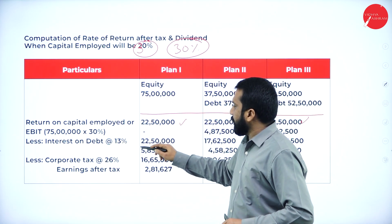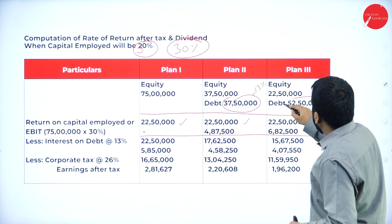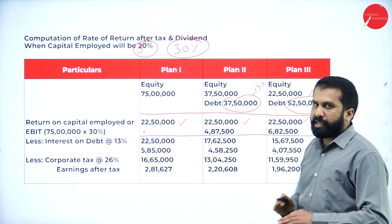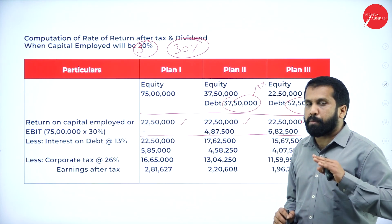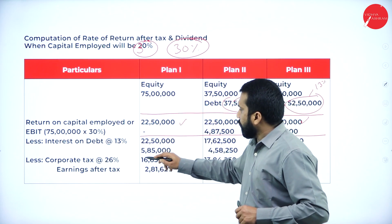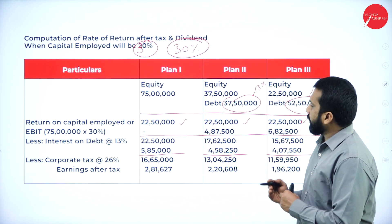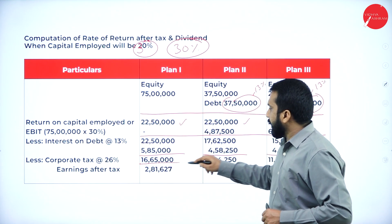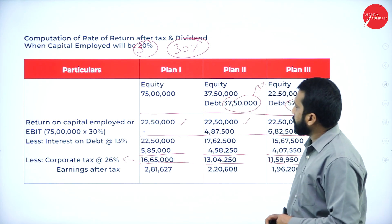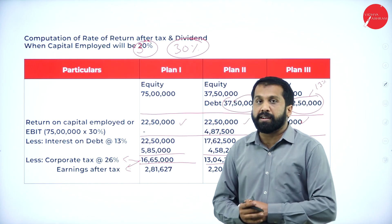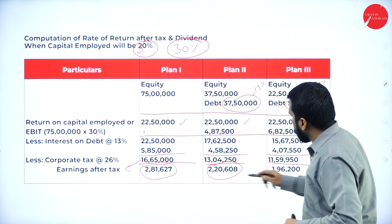Minus interest — it will not change. The same answer on 13% for the debentures will not change. So it will be 22,50,000; 17,12,500; 15,67,500 approximately. Then minus corporate tax at 26% — 26% applied to each. After calculation, you get earnings after tax of 16,65,000; 13,04,000; and 11,59,950.